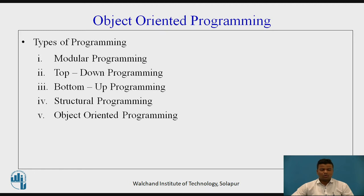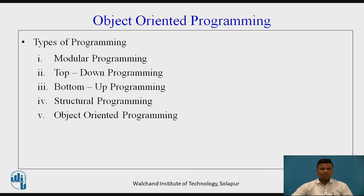For complex programs, it is really difficult to achieve output with the help of structural programming. That's why object-oriented programming is used in Java programming to achieve output from complex programs.